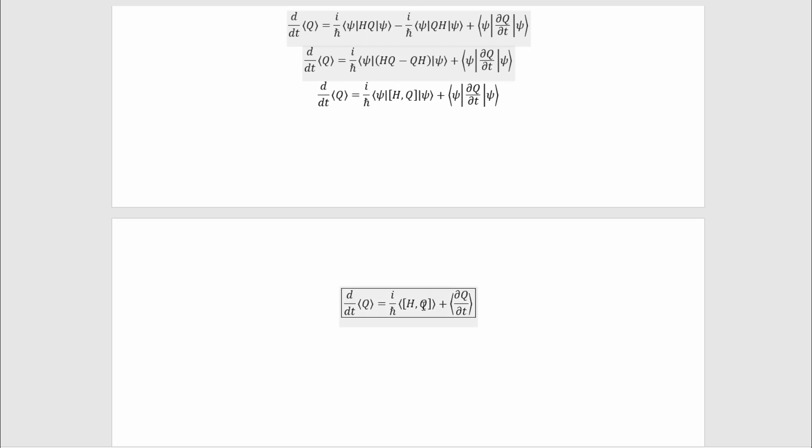So then all we have to do to derive Ehrenfest's theorem for any special case is evaluate the commutator of the Hamiltonian with that operator, and the time derivative, if it's explicitly time-dependent. And this does easily reproduce the results we had for the position and momentum Ehrenfest theorem that I derived in previous videos more directly without appealing to this abstract general way. So now you know how to do the derivation of the general Ehrenfest theorem in that beautiful abstract notation.